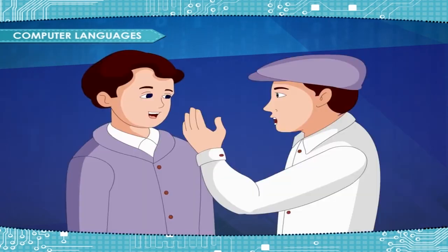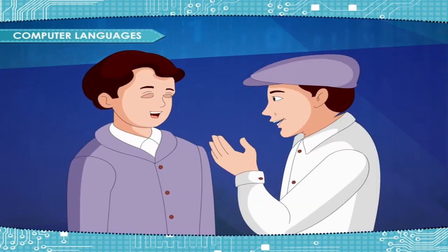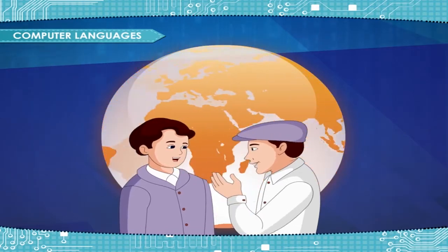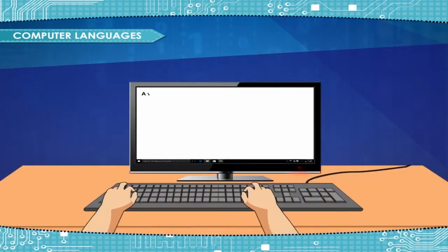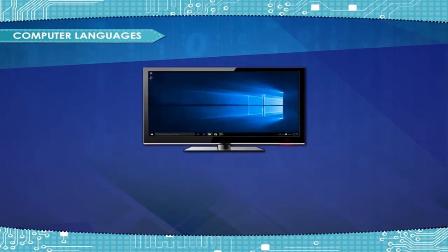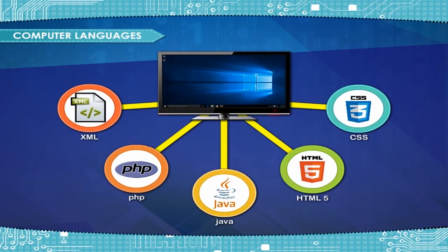Computer languages. Humans use language to communicate, and different regions have different languages. Computers also have their own languages. The term computer language includes a wide variety of languages used to communicate with computers. Different kinds of languages have been developed to perform different types of work on the computer.